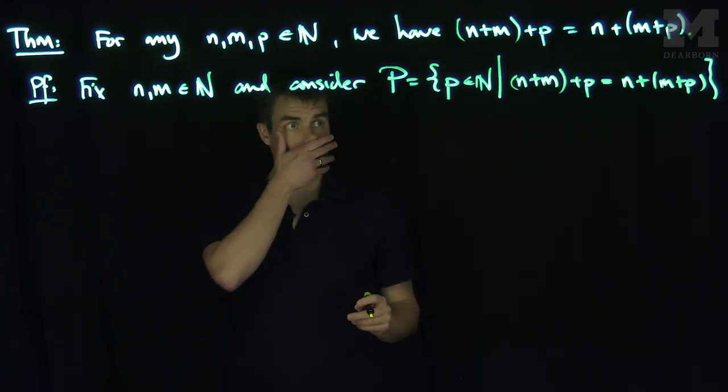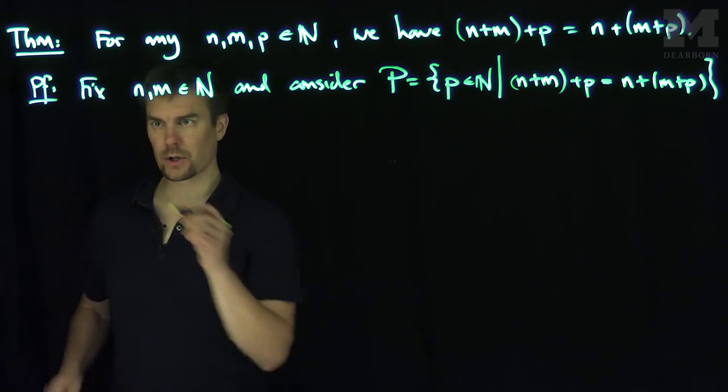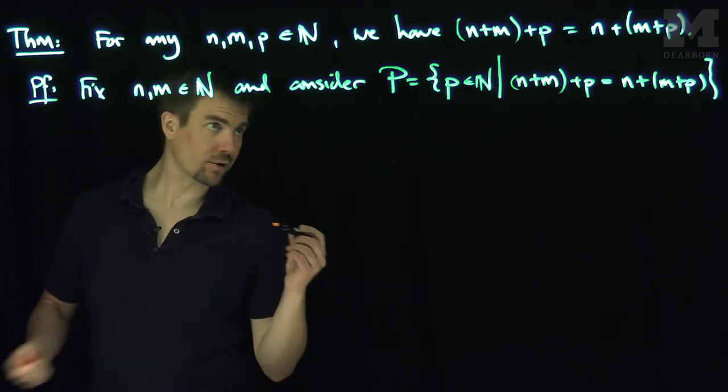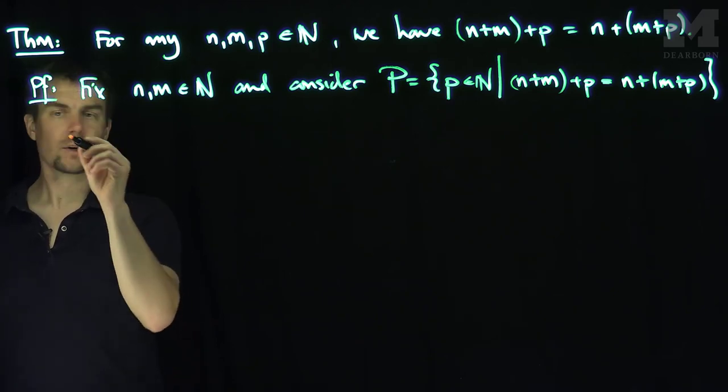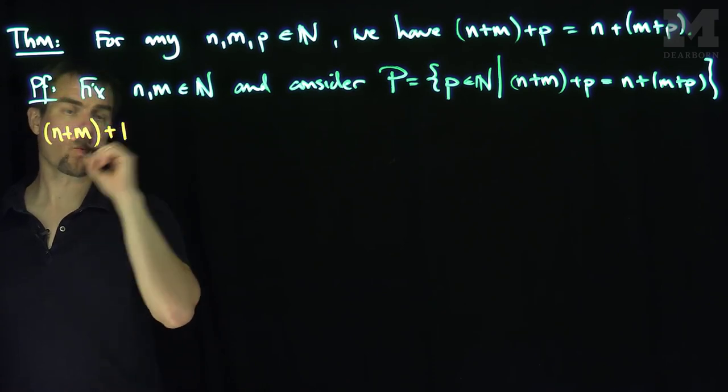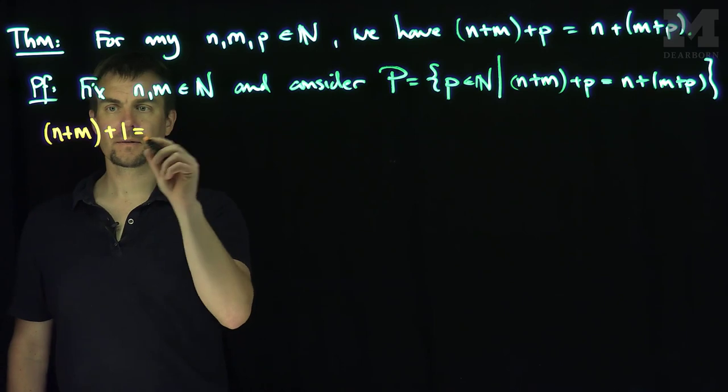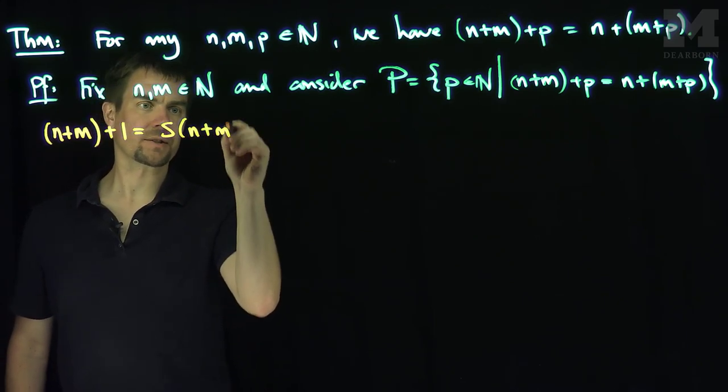So let's first show that one is in this set. So I claim that P is the entire set of natural numbers. So here's the first part of the proof. So I claim that one is in P. So n+m+1 is what? Is the successor of n+m.